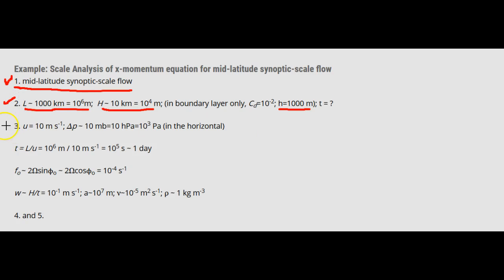Now, we know that u is about 10 meters a second, roughly. It could be a lot less and a lot more, but it's that order of magnitude. Delta p is about 10 millibar over the length of interest. We see that the time, then, is equal to the length, the scale of the mid-synoptic scale flow divided by the velocity, which is 10 to the 6 divided by 10, or 10 to the 5 seconds, which is about a day. And we see that the Coriolis parameter is about 10 to the minus 4 per second. And we can estimate other factors, such as the w velocity, which is height divided by time. So that's about 10 to the minus 1 meters per second. And so on.